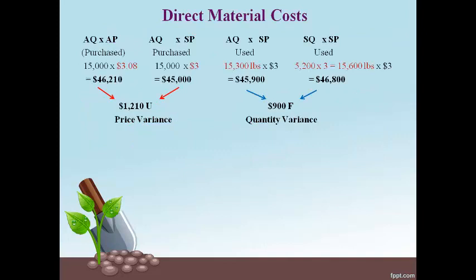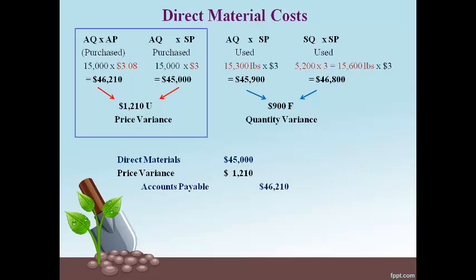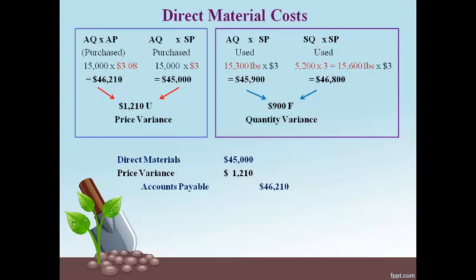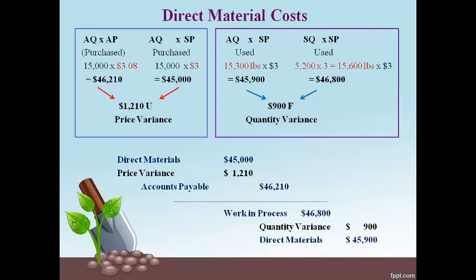Let's look at an example with numbers. The variance analysis is used to record the entries for manufacturing costs. The general rule is: the inventory account is always recorded at the estimated amount with a debit, and the credit is always the actual cost. For the purchase of direct materials, the inventory account is recorded at the estimated amount — AQ times SP. The credit is always recorded for the actual amount, AQ times AP, the amount that must be paid to suppliers. The price variance is recorded for the difference. The estimated cost of using materials is recorded with a debit to work in process, with the credit being the actual amount and the variance recorded for the difference.